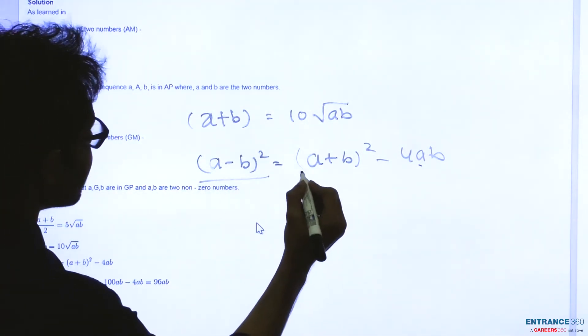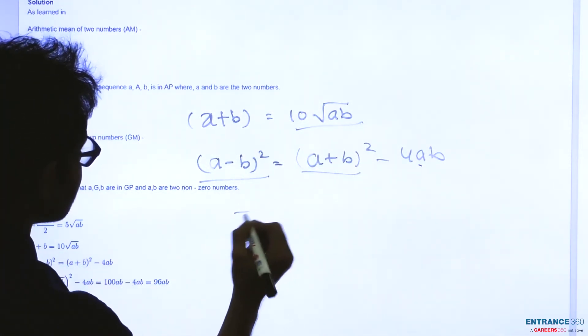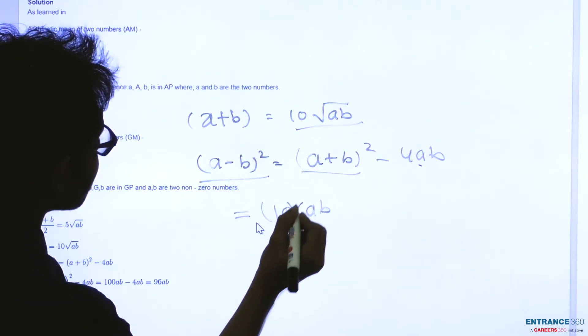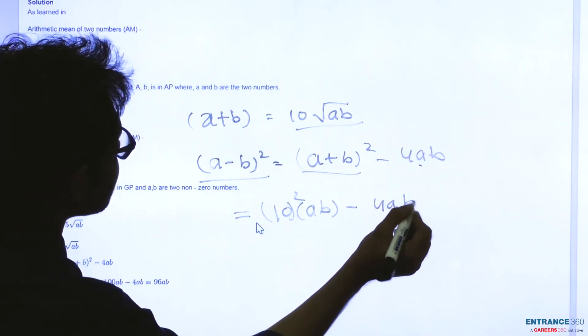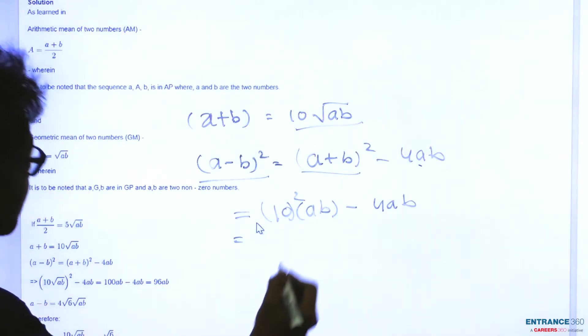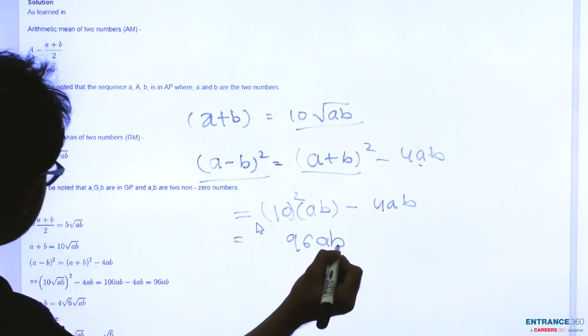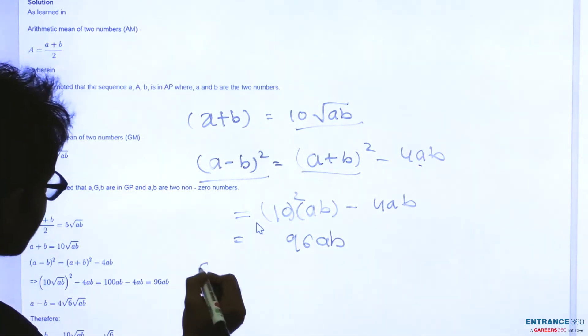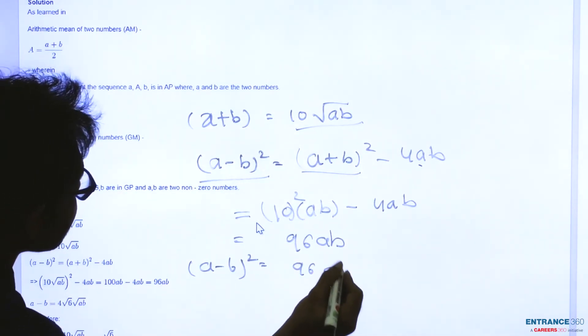We know that (A+B)² from here, which is equal to 10√(AB). So which is 10² times AB minus 4AB, which equals 100AB minus 4AB, which equals 96AB. So we get (A-B)² = 96AB.